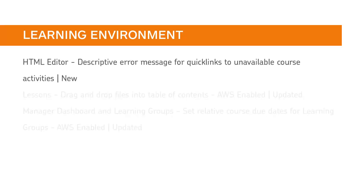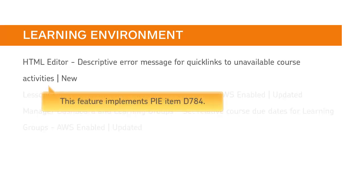A new, specific error message now appears to users who click a quick link to course activity that is outside of availability dates. This feature applies to Assignments, Content Modules and Topics, Checklists, and Discussion Topics. This feature implements PI Item D784.